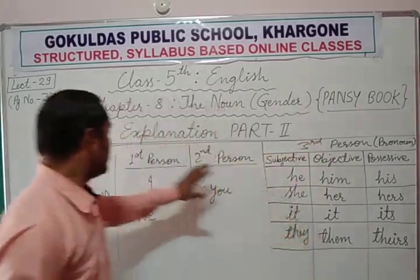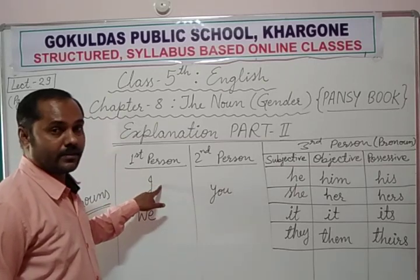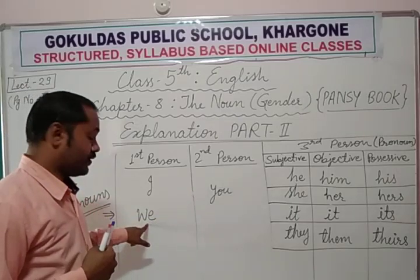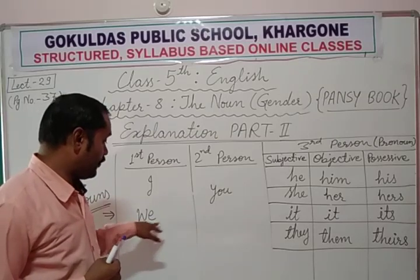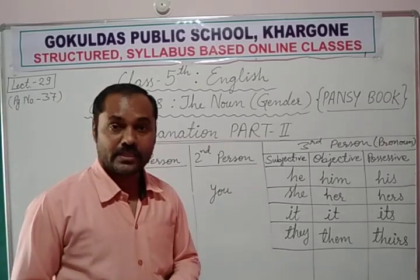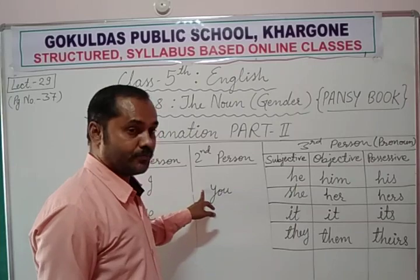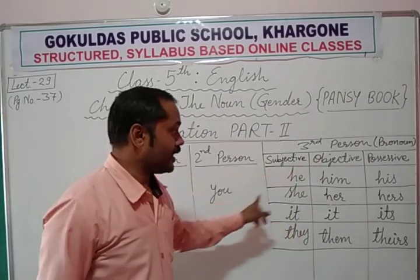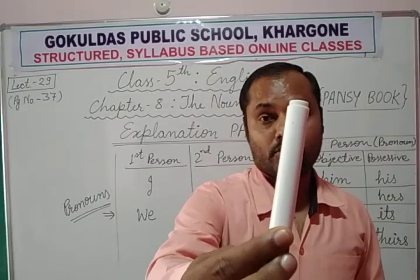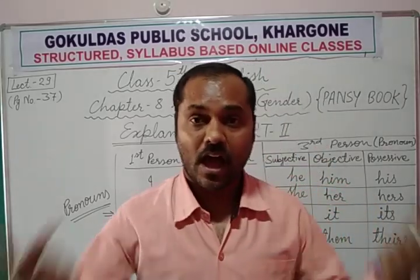We have studied third person pronouns. For first person: subjective is I, objective is me, and possessive is my or mine — M-Y and M-I-N-E. For plural first person: subjective is we, objective is us, and possessive is our — O-U-R. 'This is our class.' For second person: you remains the same for both subjective and objective case, and the possessive is your or yours. 'This pen is yours.' We generally add S at the end for possessive forms: mine, ours, yours, theirs.